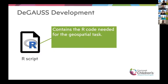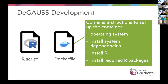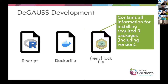Inside DGAUSS is an R script — essentially any R script you would write for your analysis, in our case for geospatial tasks. Also included is the Dockerfile, which sets up the container, installs the operating system, geospatial dependencies, R, and all R packages. To help with installing R packages and their versions, we use the renv package, which takes a snapshot of all packages and their versions required to run the R script. Those exact packages and versions are installed in the container to avoid future issues.